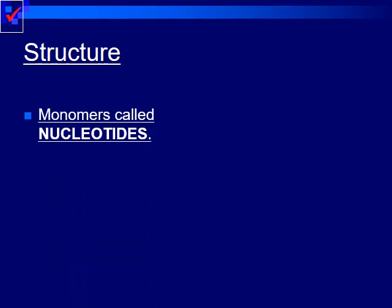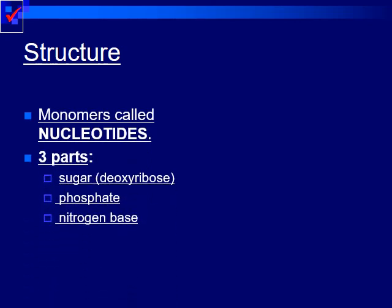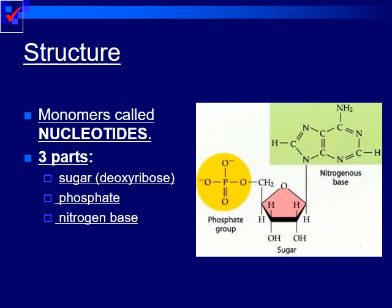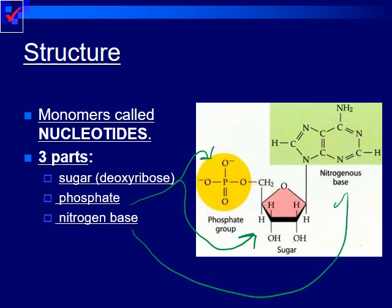So the structure of DNA. The monomers, or building blocks of DNA, are known as nucleotides. A nucleotide is comprised of three different parts: the sugar (deoxyribose), the phosphate, and the nitrogen base. Looking at the diagram, we have our sugar here, our phosphates here, and our nitrogen base found over here.